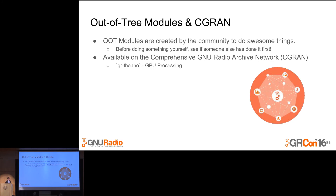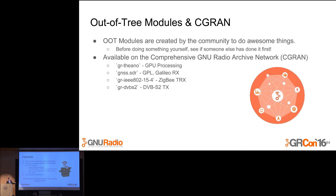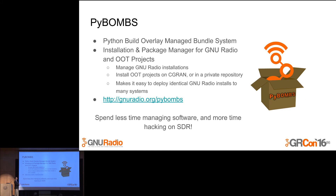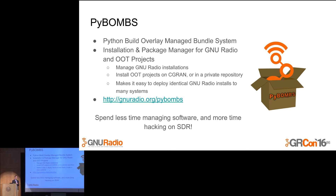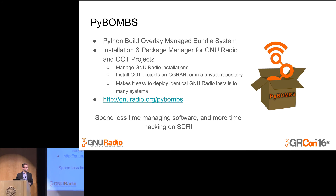If you head to CGRAN.org, you get a list of all out-of-tree projects, what they're tagged with, their description, and links to source code repositories. There are a lot of really cool ones, like GR Theano by Tim O'Shea for GPU processing, GNSS, IEEE 802.15.4 which is Zigbee, a DVB-S2 transmitter, and GR Air Modes for tracking planes. If you don't want to manage all this installation yourself, we have something called PyBombs. Martin Braun, its author, will be giving an intro to that right after lunch — it allows you to manage your GNU Radio installations and out-of-tree modules pretty easily.